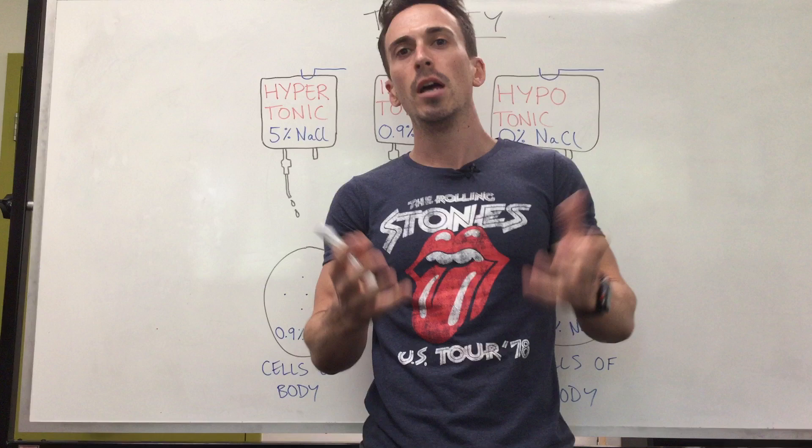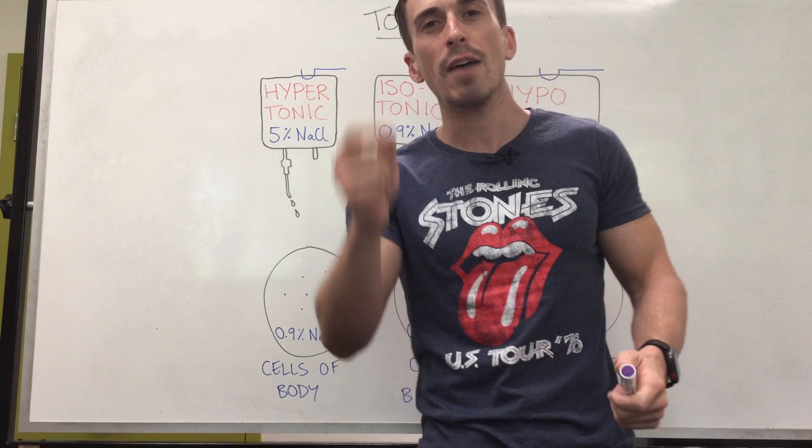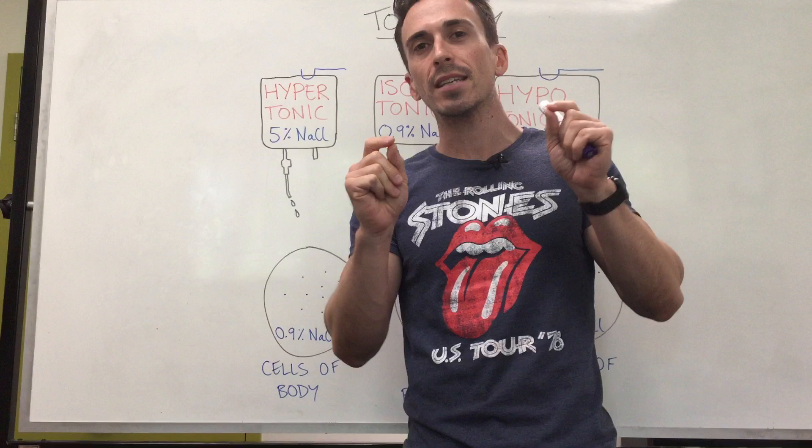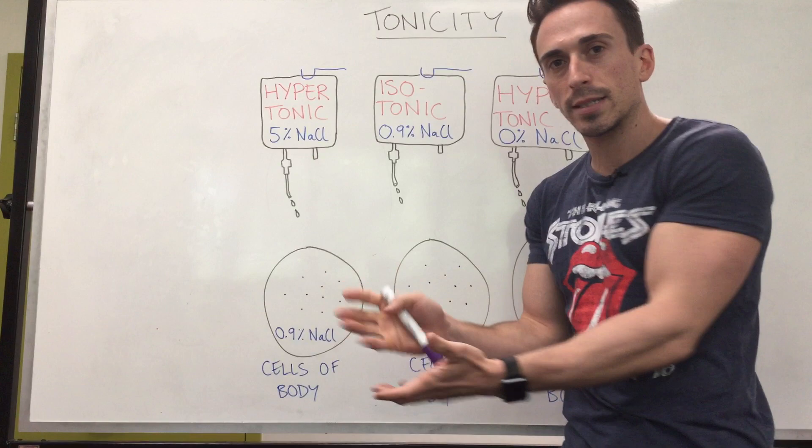The first thing you need to be aware of is that human cells, or cells within our body, have a particular concentration of substances inside. The primary substance we're looking at is sodium chloride — salt. The concentration of salt within the cells of our body is 0.9%, so 0.9% of all the solution inside our cells is salt.